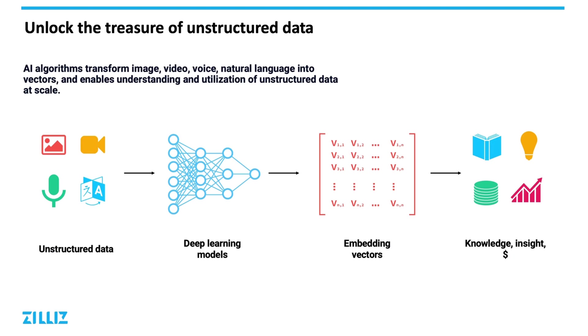With unstructured data, there is no easy way for computers to compare the data directly. Things like images, videos, voice, and natural language fall under this category, with 80% of all data falling into this category.